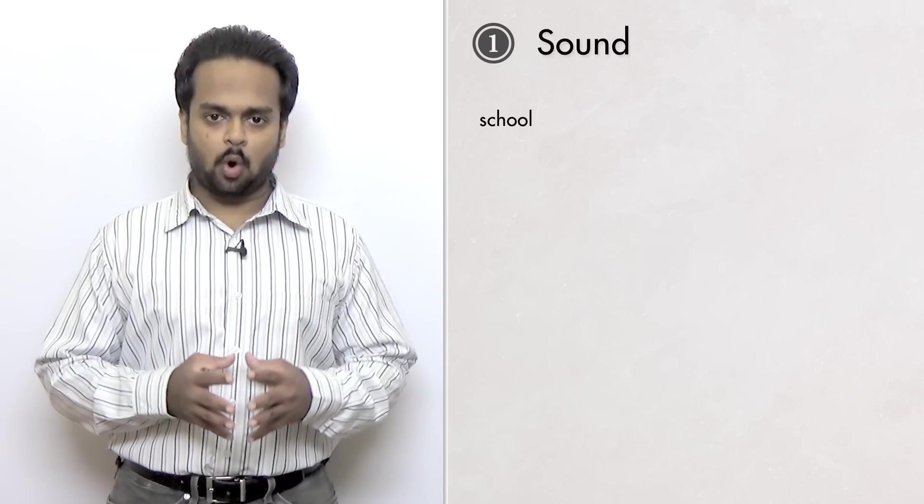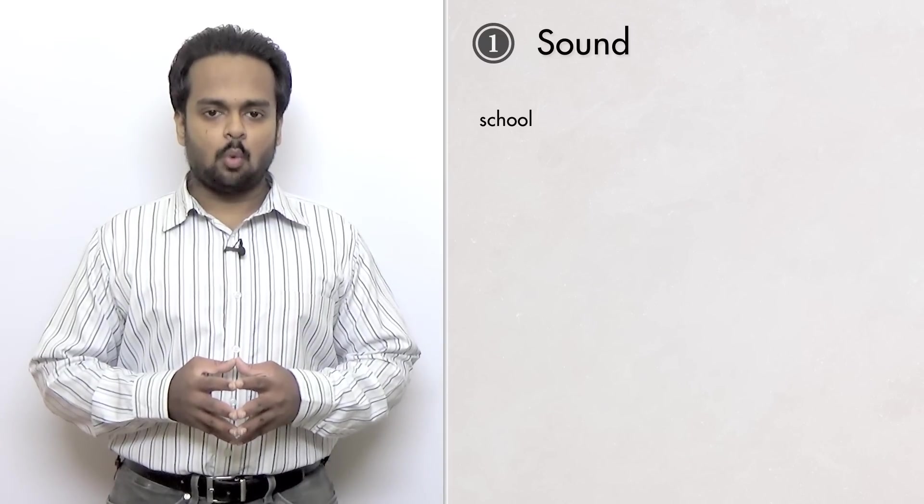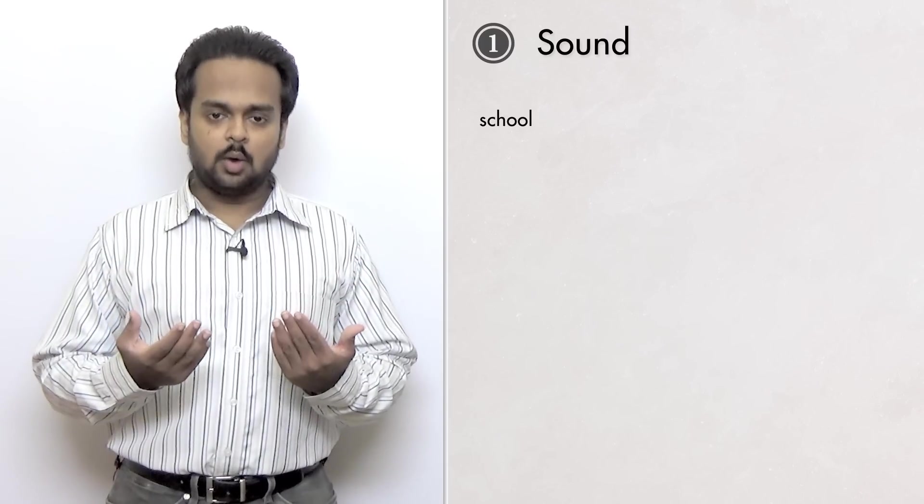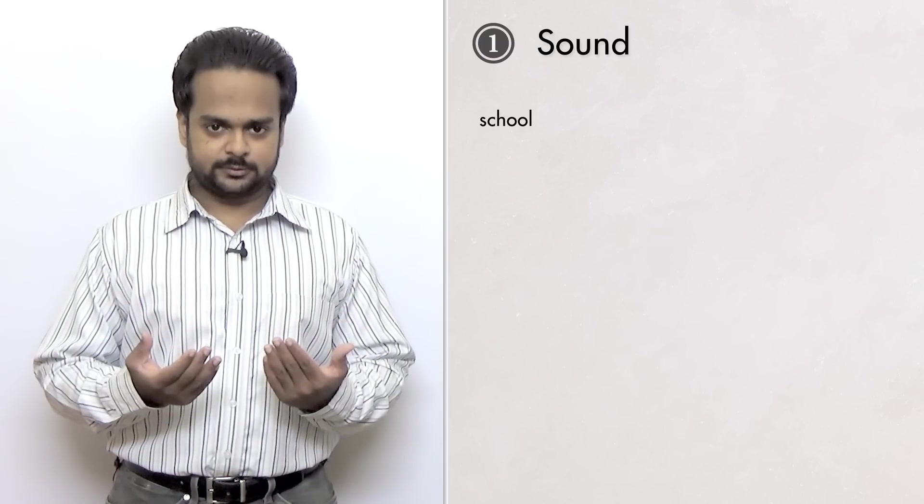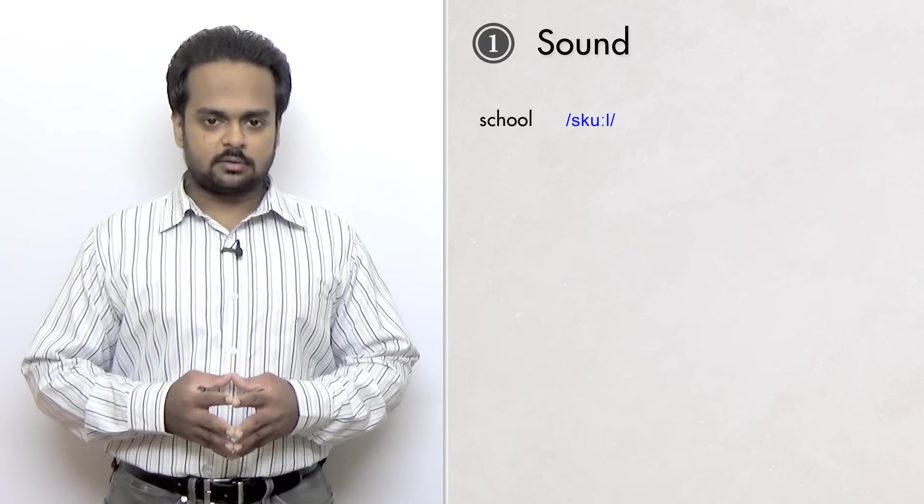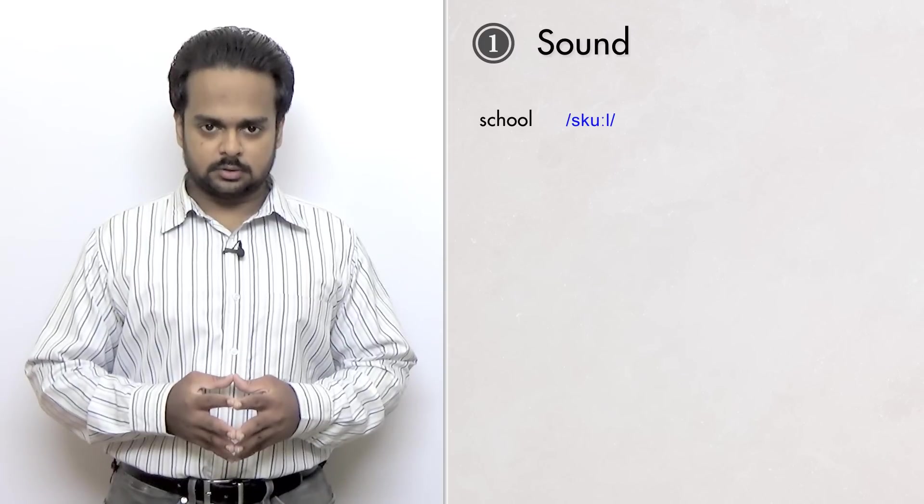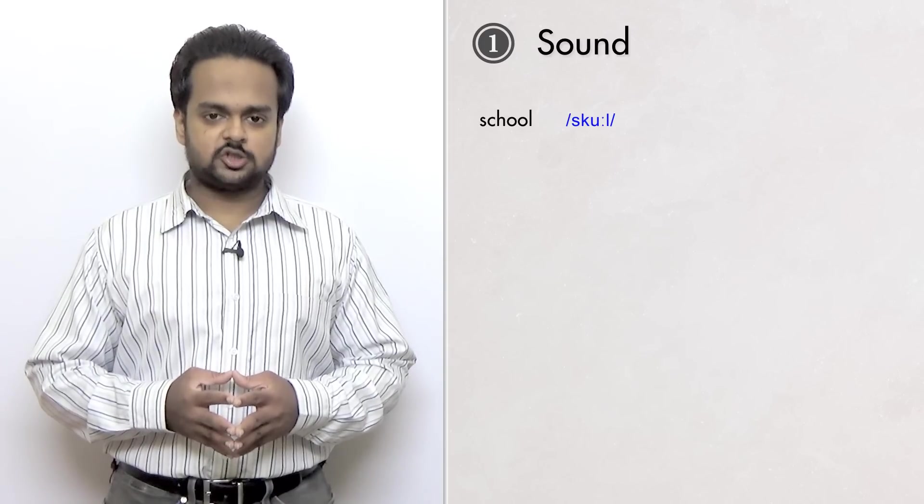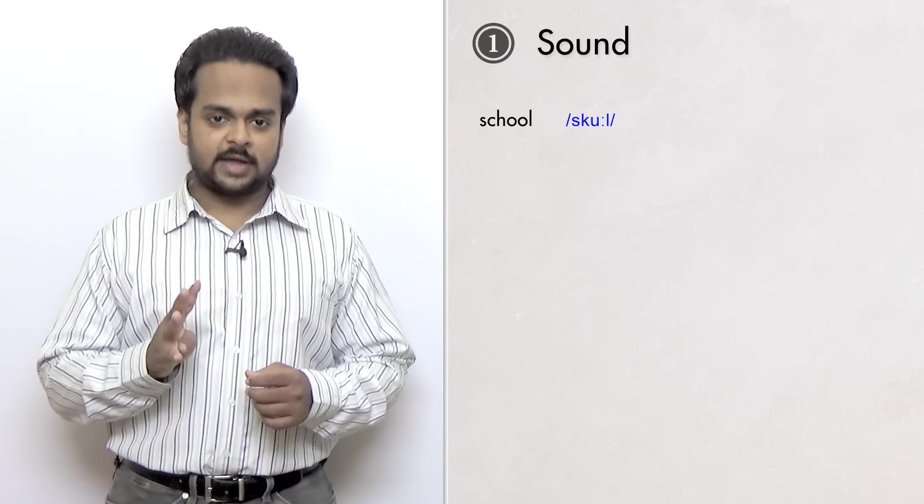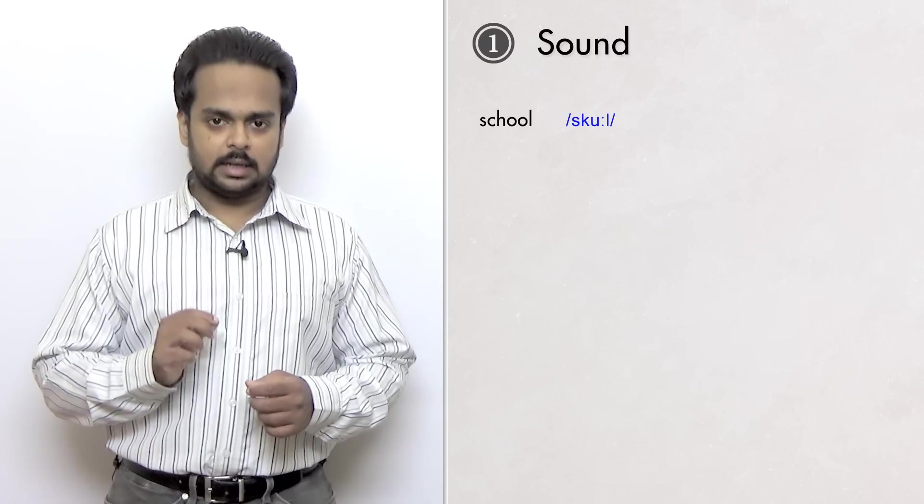So number one is sound. When we write a word in English, we write it using letters. Take this word for example. We write it with six letters. In the same way, when we pronounce a word, we do it using sounds. This word is pronounced school. You see that the written form has six letters – S, C, H, O, O, L – but the spoken form has four sounds – S, K, U, and L.